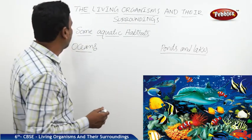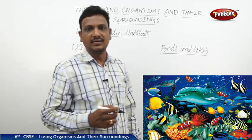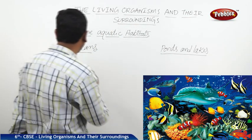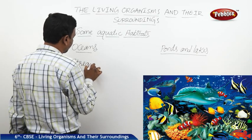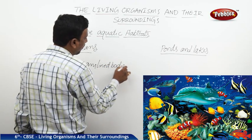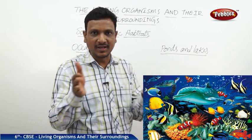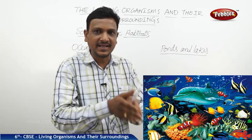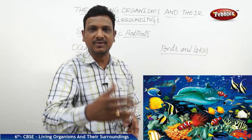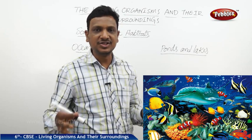Now let us look at aquatic habitats. The first one is oceans. The animals that live in the ocean have the special feature of streamlined bodies — they have a pointed snout. All fish have a snout, and they have a compressed body, so they can easily move in the water. They have fins to swim and a tail to change the direction of their swim. The streamlined body allows them to move from place to place.